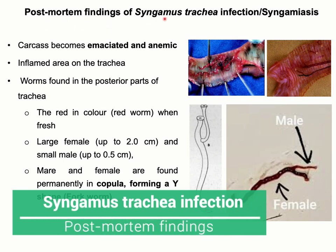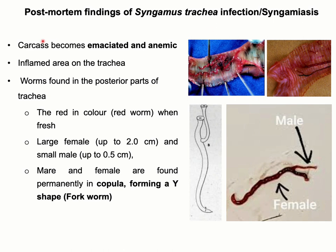Post-mortem findings of Syngamus trachea infection: at necropsy, an emaciated and anemic carcass will be found. Inflamed trachea along with worms will be seen. Syngamus trachea is bright red in color; the male parasite is much shorter than the female, and both male and female parasites are found in copula forming a Y-shaped structure, which confirms the Syngamus trachea infection.